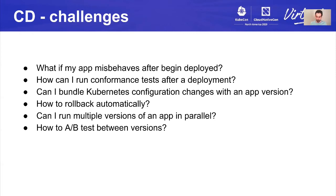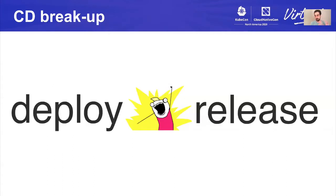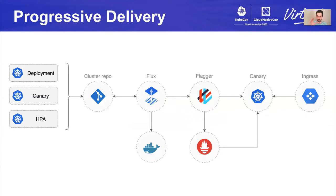So in order to make such things easier to describe, we can break deployment from the release process. We use the continuous delivery tool to create deployments inside the cluster, but instead of letting Kubernetes roll out that deployment to everyone, we have a new thing that sits at the end of the pipeline and drives the release process differently. This is where Flagger comes into play. You have your cluster repo, your deployments there, and you also have a canary object — a custom resource definition that Flagger understands — where you define the policy of how you want the release process to happen inside the cluster.